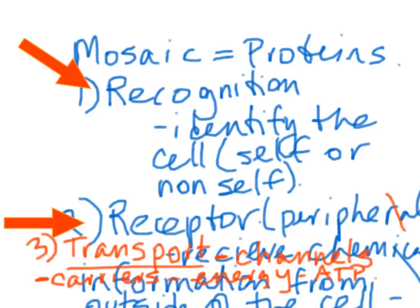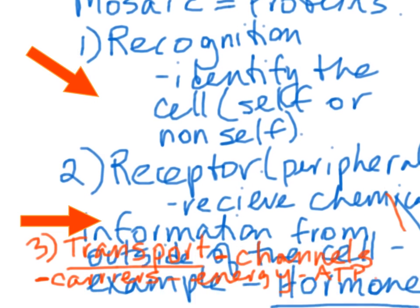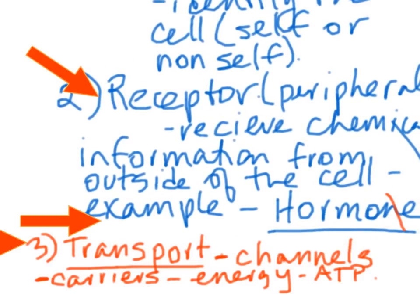To summarize, the three kinds of membrane proteins are: recognition proteins, which identify cells as self or foreign; receptor proteins, which receive chemical information from outside; and transport proteins, which either allow passive movement through channels or expend energy to carry molecules across the membrane using carriers. Hope that helped.